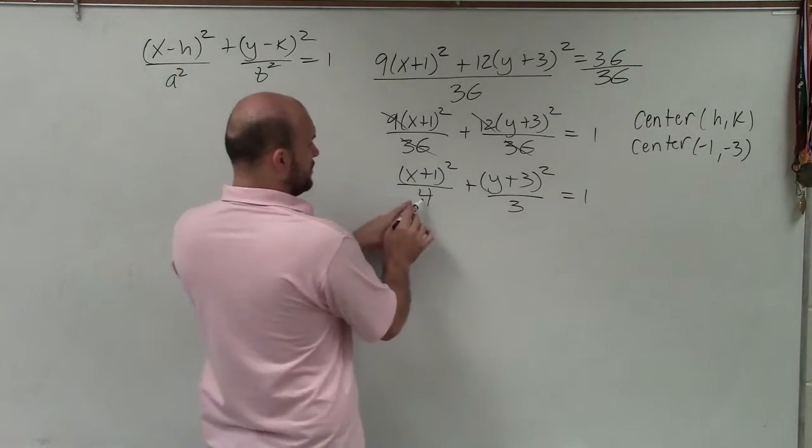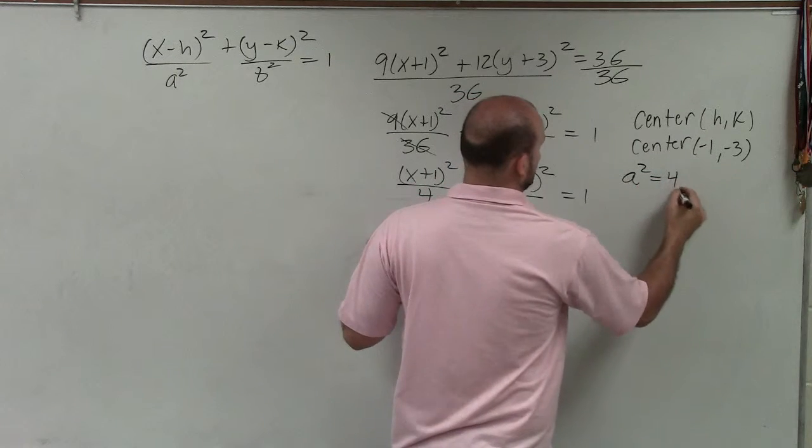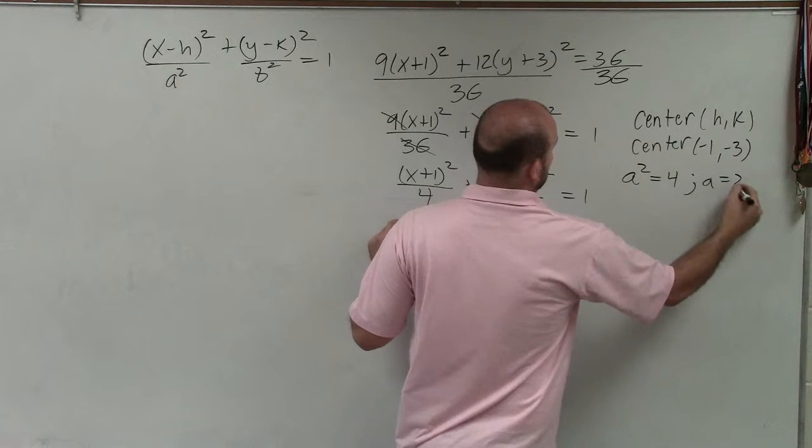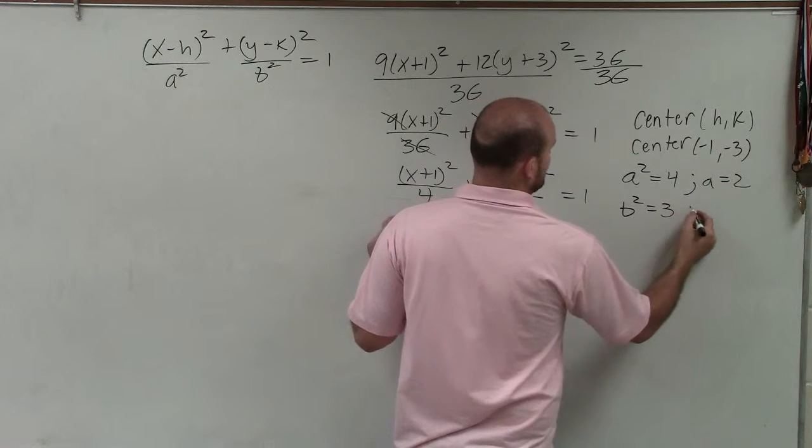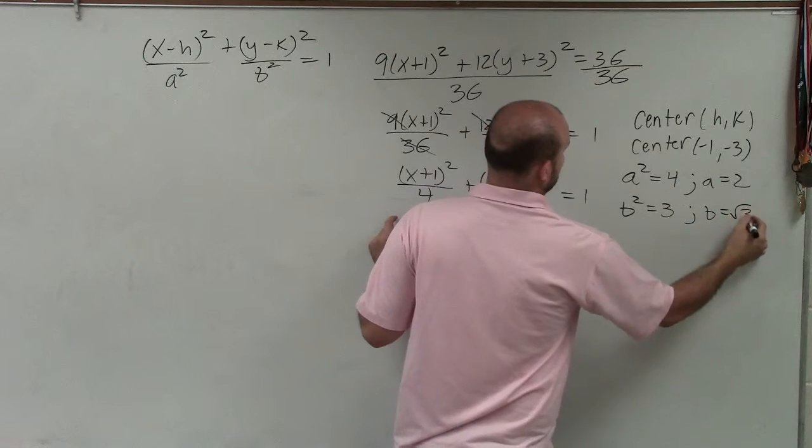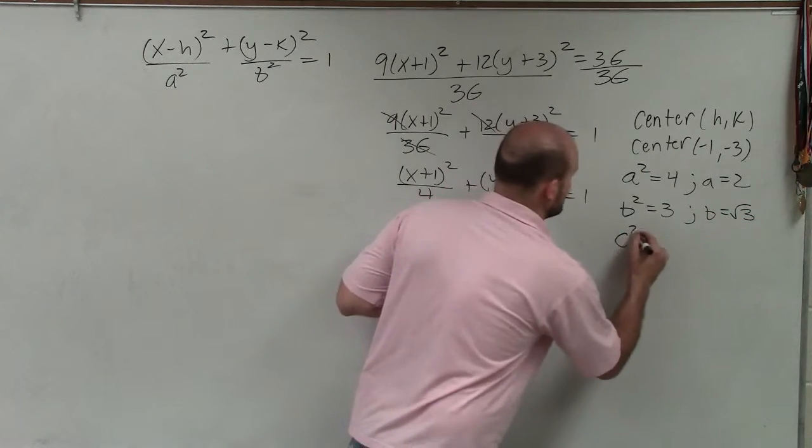The next part of information is we know that the larger number is a squared. So I can say a² = 4, so therefore, a = 2 when you take the square root of both sides. b² = 3, so therefore, b = √3.